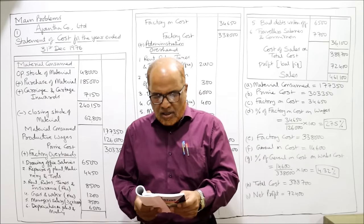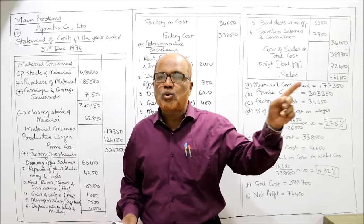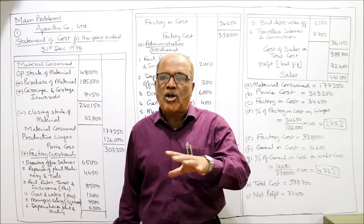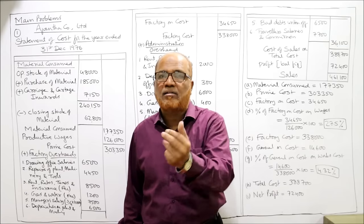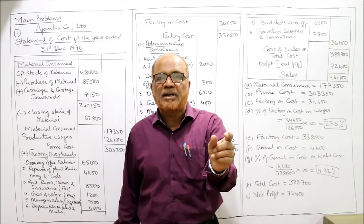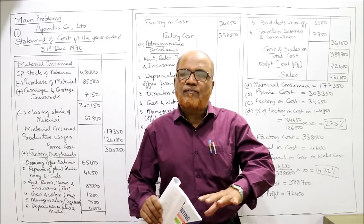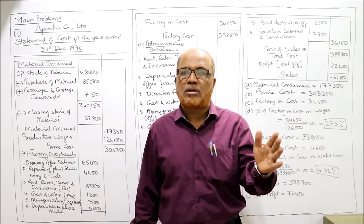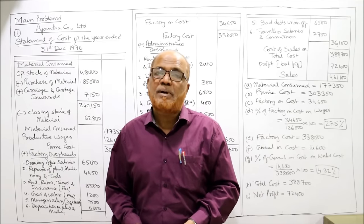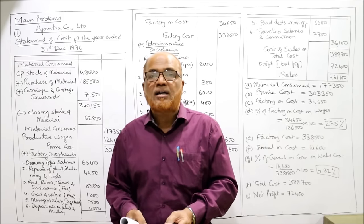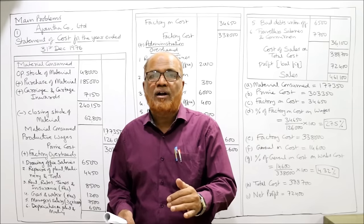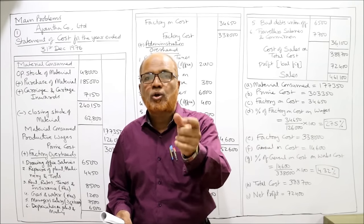First item: traveling expenses — remember it is related to sales, so it should be taken under selling overhead. Drawing office salaries — designing and drawing of the product is done in the factory, so drawing office salaries go under factory overhead. Counting house salaries — counting is done after production in selling and distribution, so it goes under selling and distribution. Advertisement expenses — selling and distribution. Carriage and cartage outward — selling and distribution. Carriage and cartage inward — added to purchase of material.